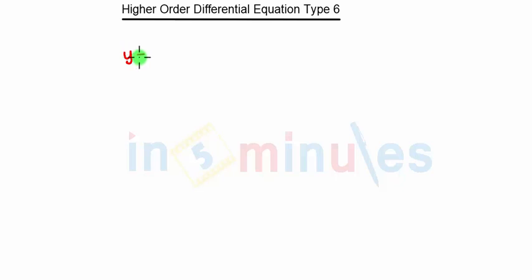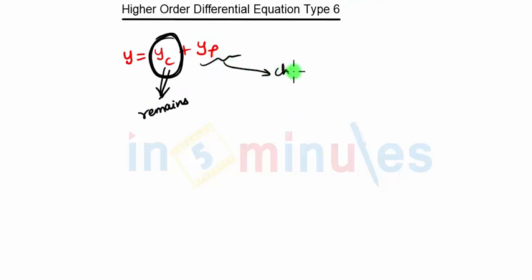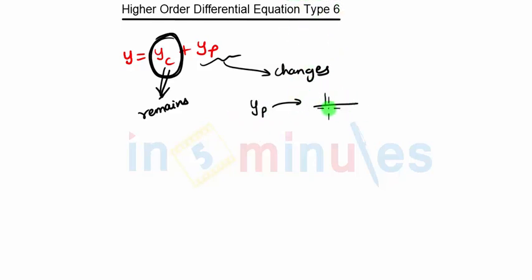The general solution for any higher order differential equation is given by y = yc + yp. Till now we saw that the method to find yc remains the same for all the types, and the method to find yp changes in every type. So in Type 6, if yp has terms like (D ± m) into some function of x.